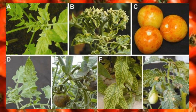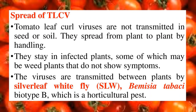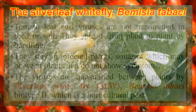The spread of the disease is not done by seed or soil. It is transmitted from plant to plant when plants are handled by humans during horticultural processes. The virus stays in infected plants, including weed plants, and survives there. Once the tomato crop is cultivated, the virus moves from weed plants onto the tomato crop and causes the infection.